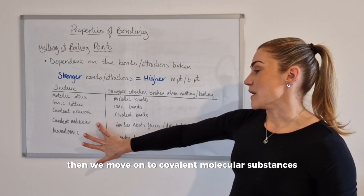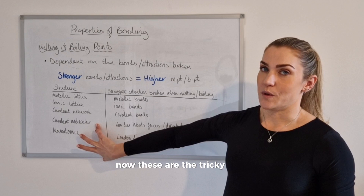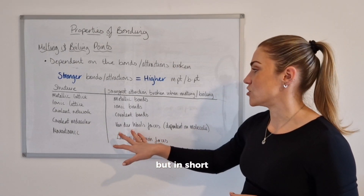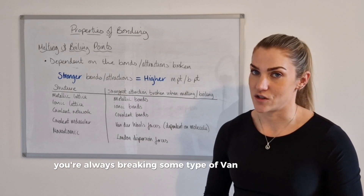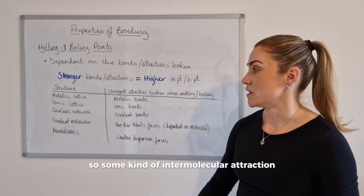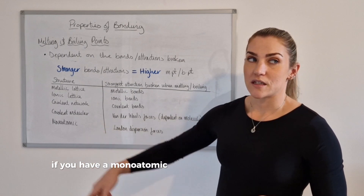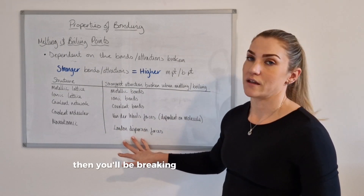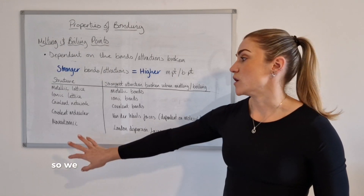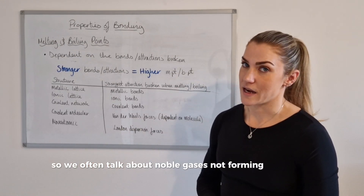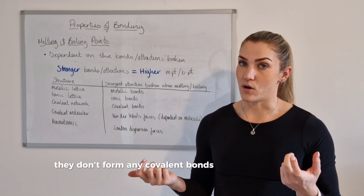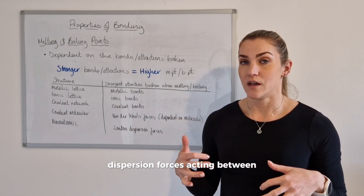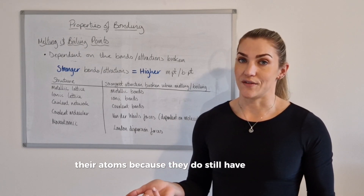Then we move on to covalent molecular substances. These are the tricky ones because it's very dependent on what the molecule actually is, but in short you're always breaking some type of van der Waals force — some kind of intermolecular attraction. If you have a monatomic substance, such as a noble gas element, then you'll be breaking London dispersion forces. Noble gases don't form any bonds between their atoms, but they will still have London dispersion forces acting between their atoms because they still have electrons.